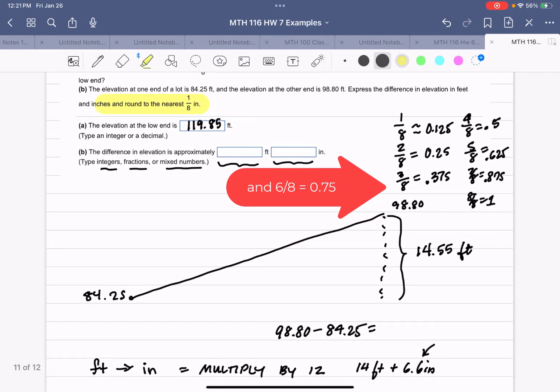Now we have to look and see which one of these is the 6.6 inches closest to, and it's closest to 5/8. So the answer they want is 14 feet and 6 5/8 inches. So that's a little tricky there. You have to be sure you always read your instructions.